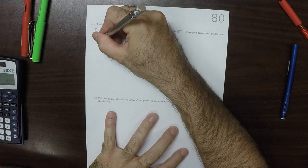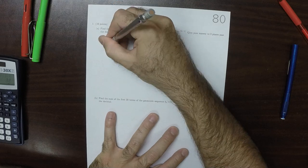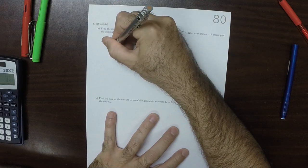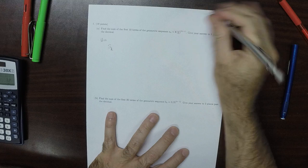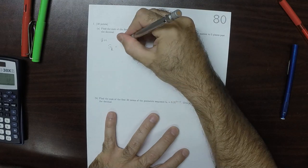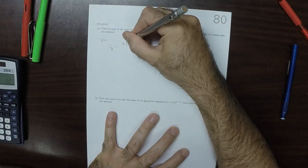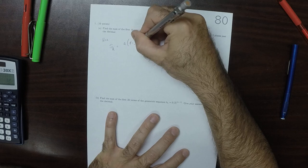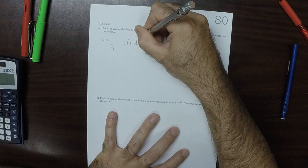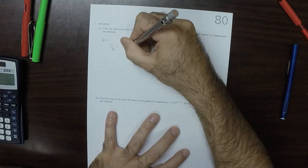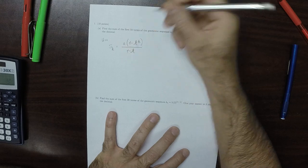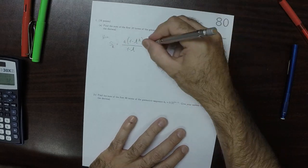What you're requested to use is the formula S_K equals A times (1 minus R to the K) over (1 minus R), and you're requested to use it.